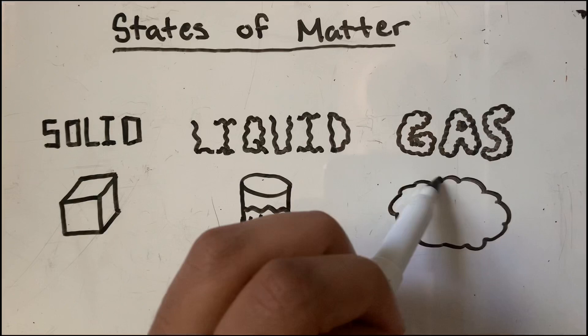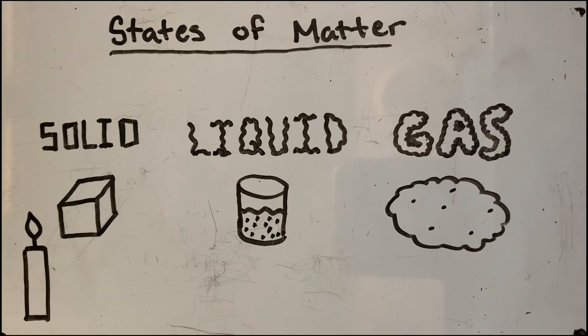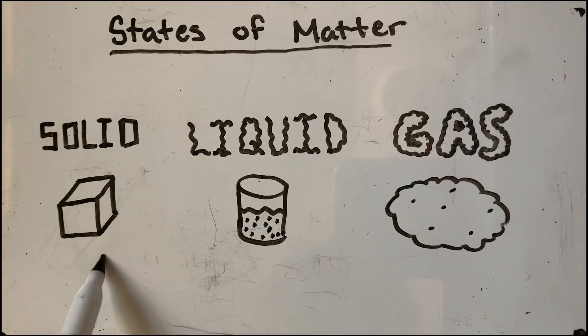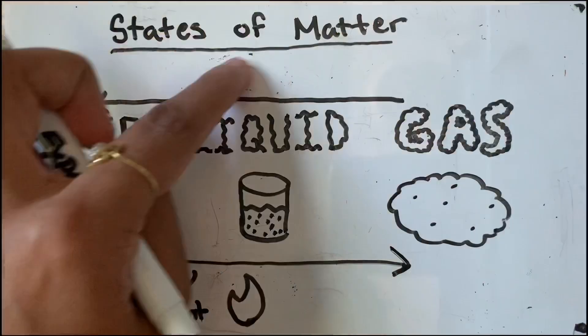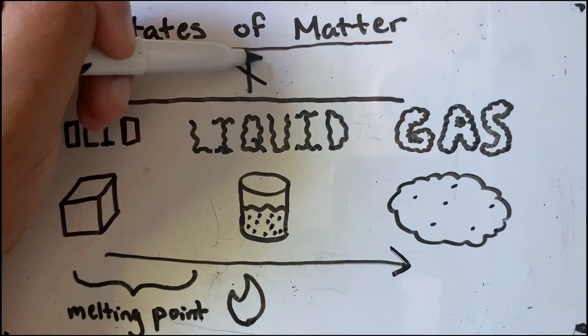The three states of matter can be interconverted without changing the composition of the substance. Upon heating, a solid will melt to form a liquid. This temperature at which a solid turns into a liquid is called its melting point. On the other hand, a cooling gas will condense into a liquid. When a liquid is cooled further, it will freeze into a solid.